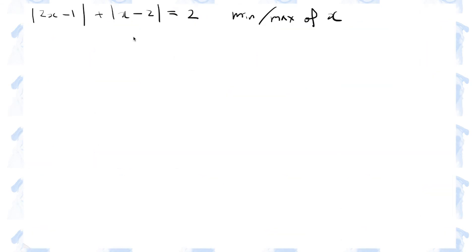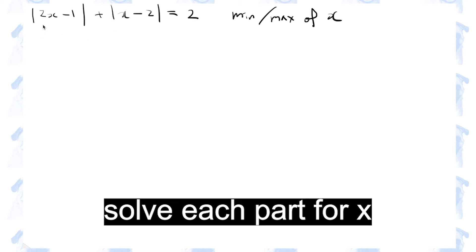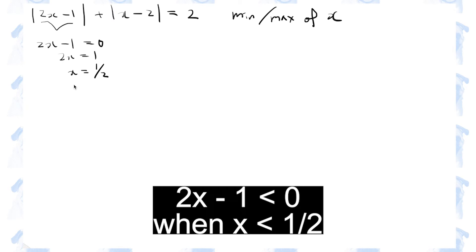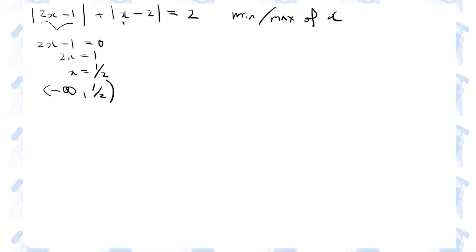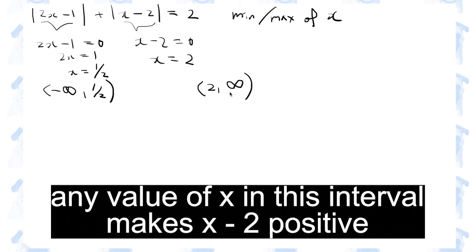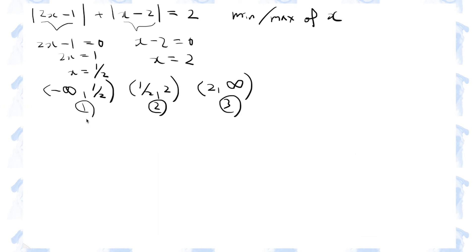Number 6. We have an equation that includes two absolute value expressions, and we need to find the minimum and the maximum values of x. We need to find the boundaries beyond which these expressions become negative. So let this expression be equal to 0 and solve for x. Now we know that if x is less than a half, this expression becomes negative — anything past this point, all the way up to negative infinity. Similarly, anything bigger than 2, all the way up to positive infinity. And finally, we have an interval between 1 half and 2, and we need to check each of these three intervals.